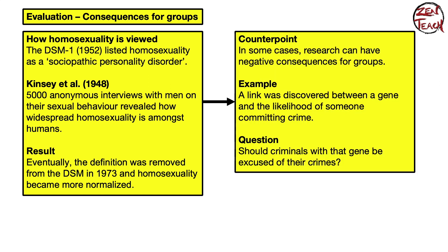As a counterpoint, research can also have negative consequences on groups. A gene has been linked to a likelihood of committing crime. This raises two questions: should criminals with that gene be excused of their crimes, arguing their genes removed their choice? Or should people with that gene be monitored preemptively to prevent crimes? You can see how quickly applying scientific findings like this to the population can turn quite nasty.